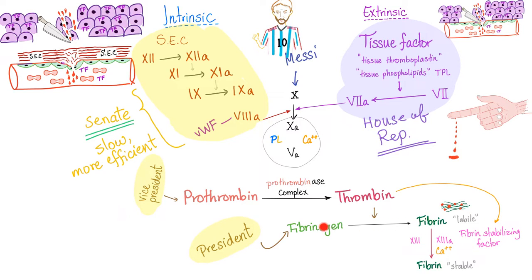Fibrin comes from fibrinogen, which is inactive. Who activates it to fibrin? Thrombin. Thrombin is active, but it's present in an inactive form called prothrombin. Prothrombin is factor 2; fibrinogen is factor 1 — we discovered them first, then worked upwards, which is why factor 1 is at the bottom and factor 12 is at the top. For the prothrombinase complex, we need two numbers — 10 and 5 — and two words: calcium and phospholipid.